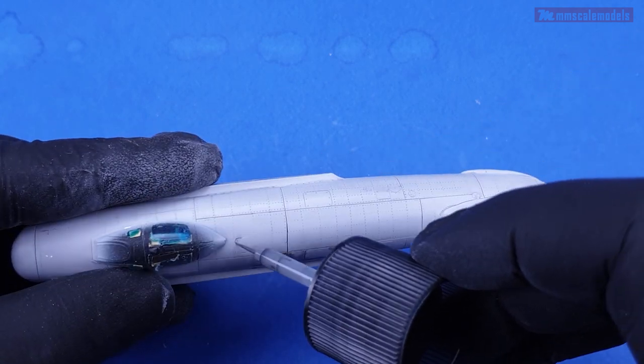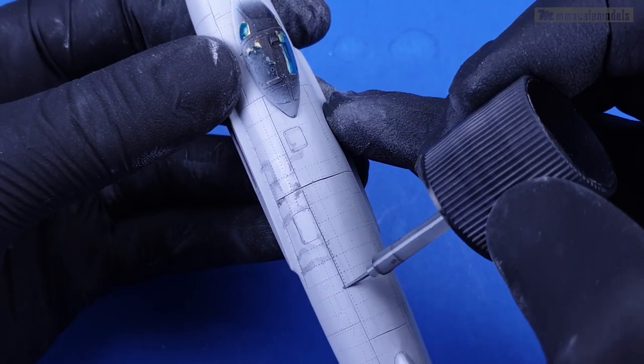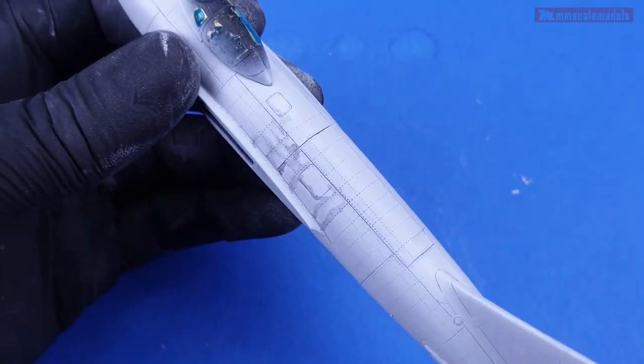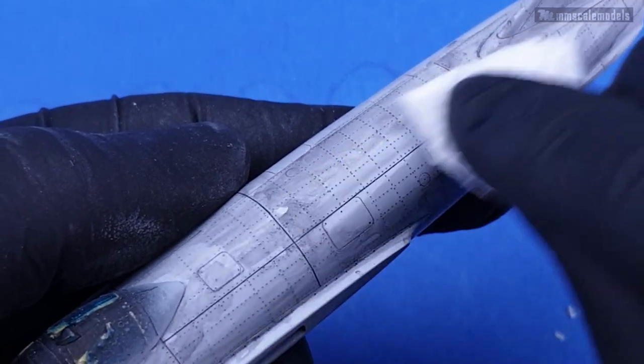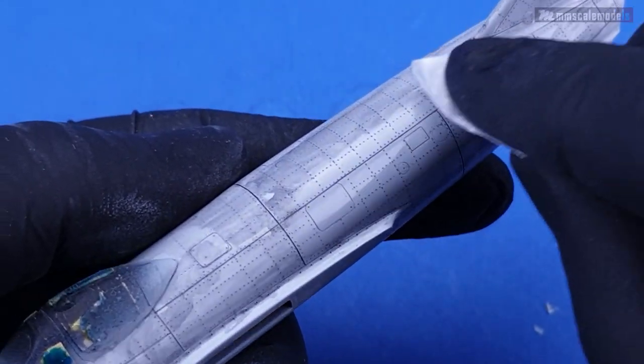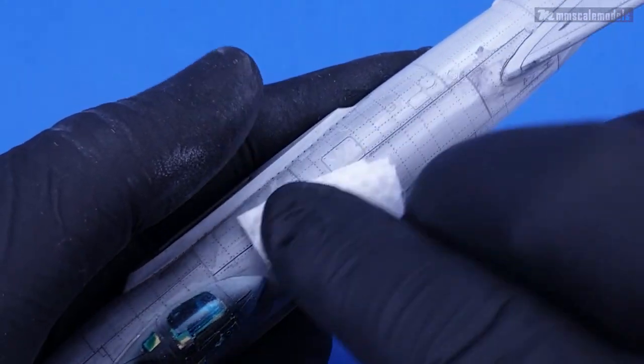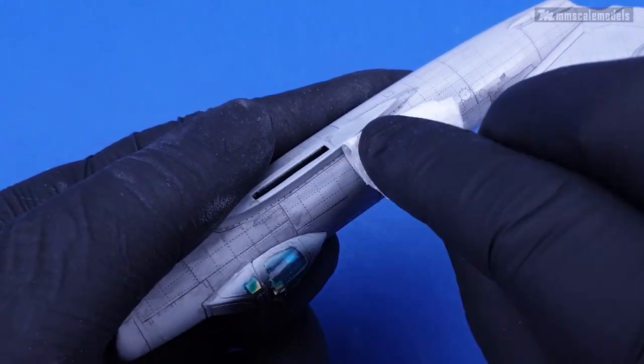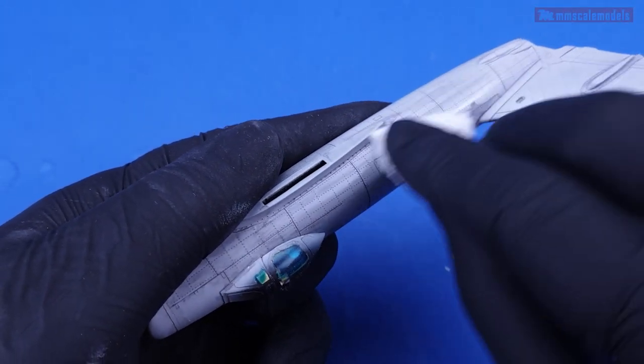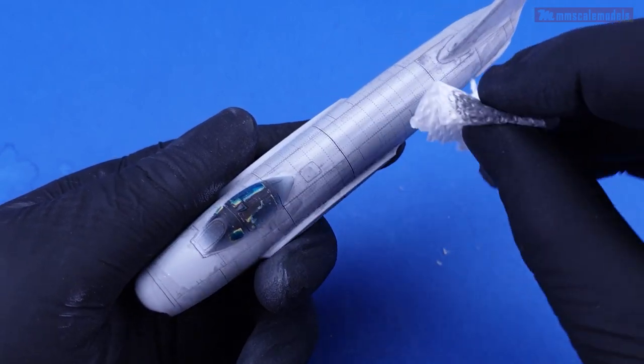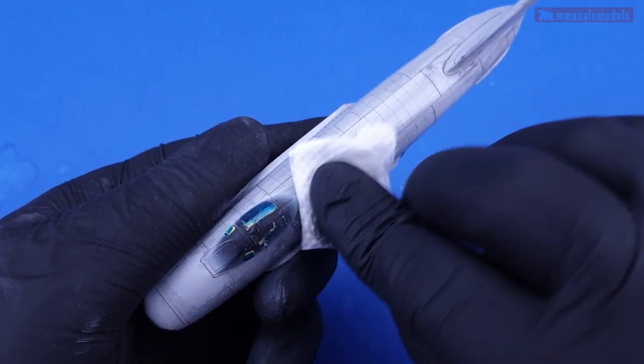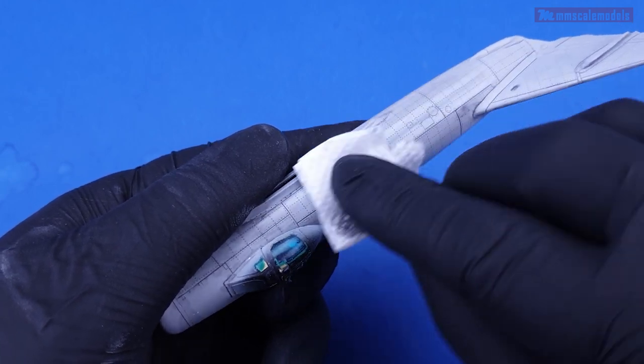Next I applied a dark grey panel line accent color from Tamiya over all panel lines and rivets. This will show all imperfections and also it will help the camera better capture the results. But probably the most important benefit is that this enamel wash will melt the fine primer dust and essentially clean the rivets.